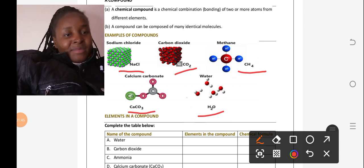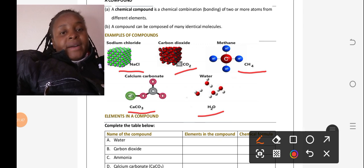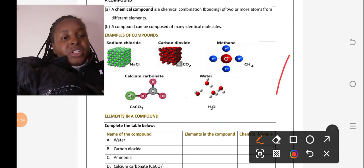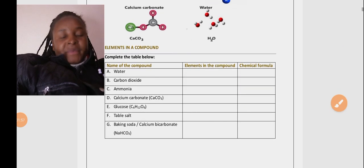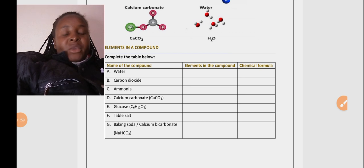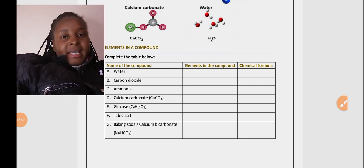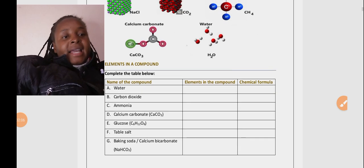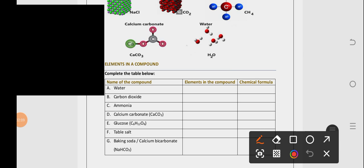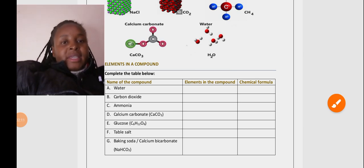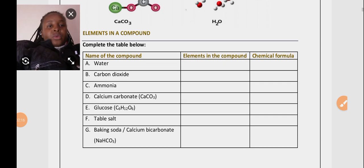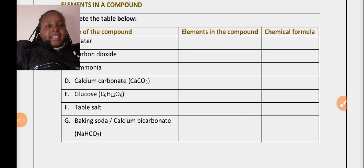So now let's move on to elements in a compound. We should be able to tell which elements we have in a compound. For example, we have a table here and they want us to complete it for water. Which elements are in a compound of water? Let me first try to zoom in the table.